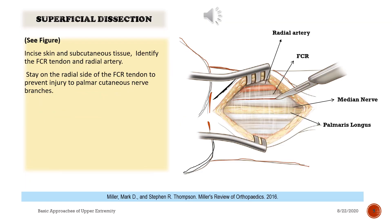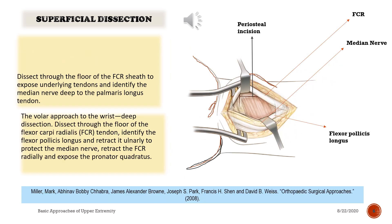Superficial dissection: incise the skin and subcutaneous tissue. Identify the FCR tendon and the radial artery. Stay on the radial side of the FCR tendon to prevent injury to palmar cutaneous nerve branches. Dissect through the floor of the FCR sheath to expose underlying tendons and identify the median nerve deep to the palmaris longus tendon.